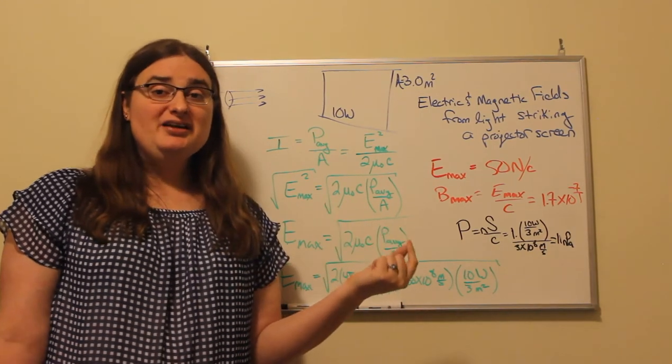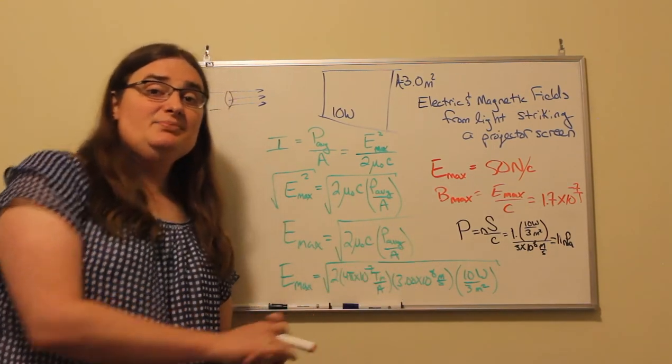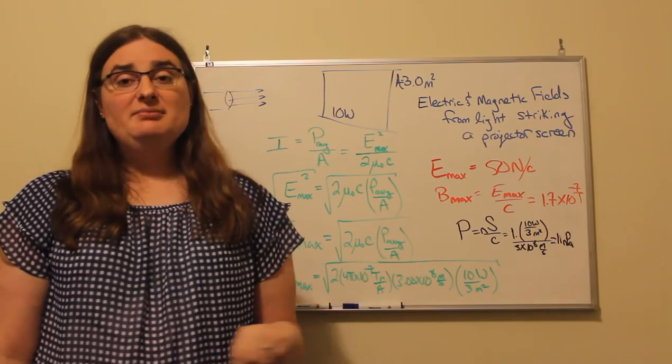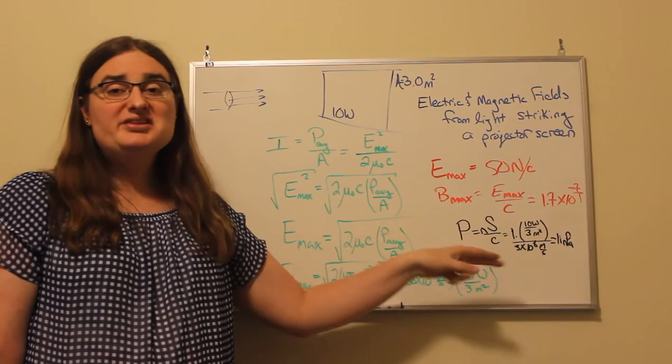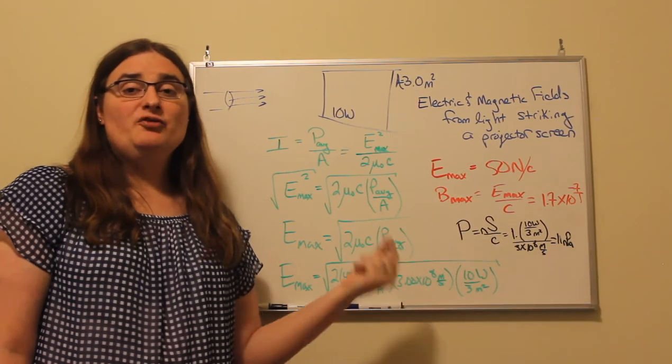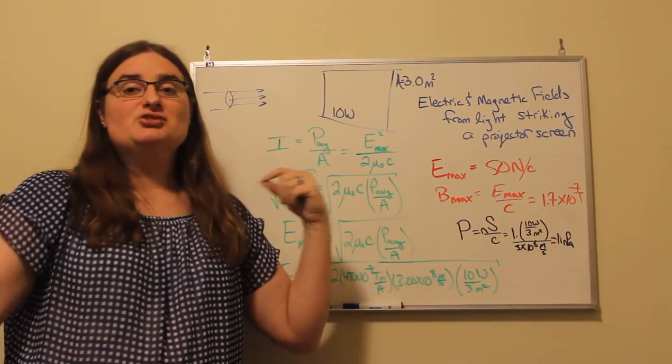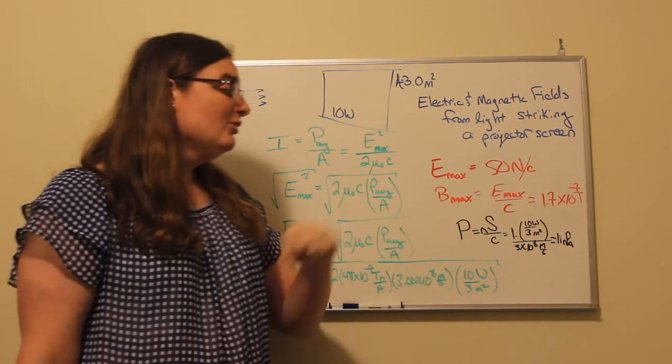So for something like a projector, much of the light is getting absorbed by the screen, but some of the light is clearly getting projected back. So you could come up with some estimate for the amount of absorbed versus reflected light somewhere between one and two.